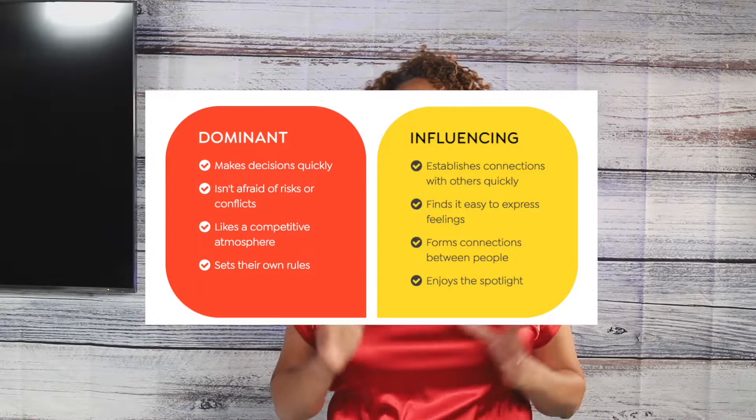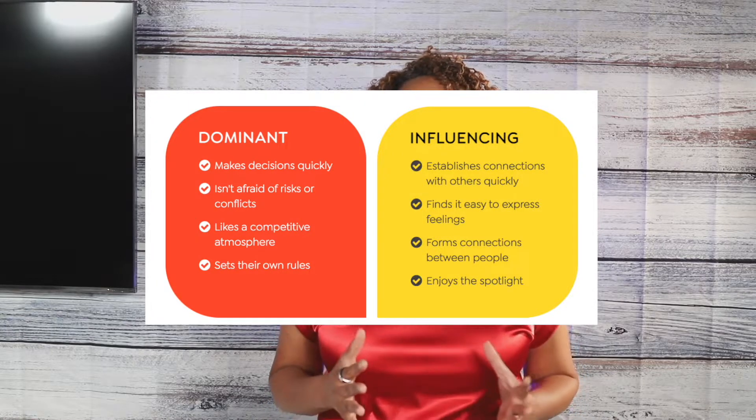The second preference is I for influence, and this person is sociable, relatable, likes to be around people, moves quickly like the D does, and really values those interactions.